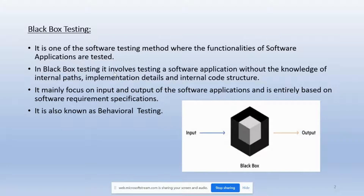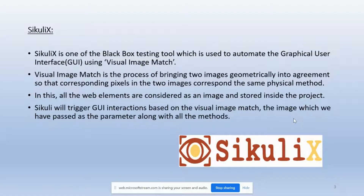There are three types of black box testing: first is functional testing, second is non-functional testing, and third is regression testing. Here is an image showing how black box testing is done — input goes into the black box testing tool and produces output. Sikuli X is one of the black box testing tools.